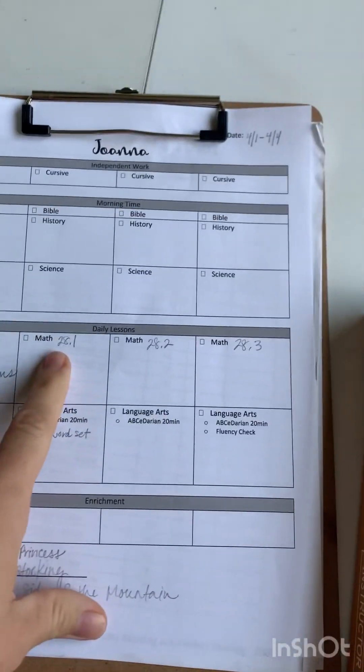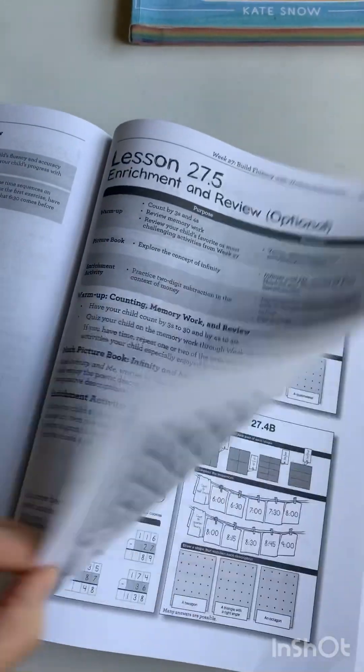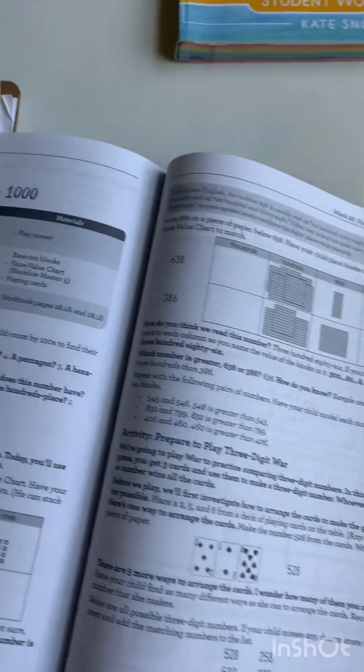All right, so this is today. We're supposed to be doing lesson 28.1. I have these little tabs here. I love having these tabs, but it's on the lesson from yesterday, so we're going to go to the right lesson, and here it is.